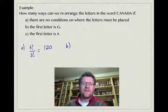Part B says the first letter is C. If the first letter is C, that means we only have five letters to work with after that, so we only have 5 factorial. And three of those letters are still A's, so we divide by 3 factorial. And in the end we get an answer of 20.